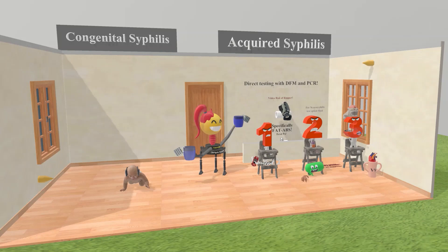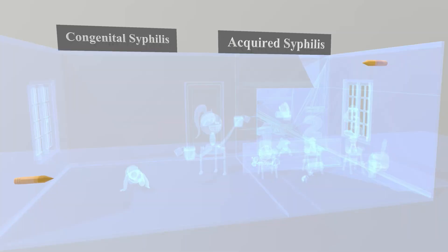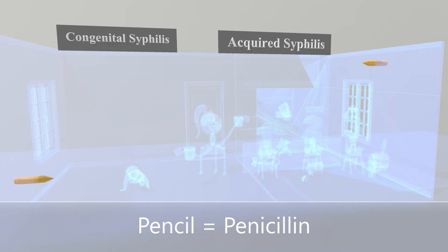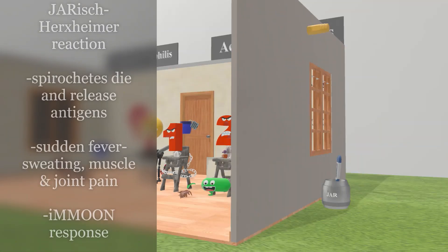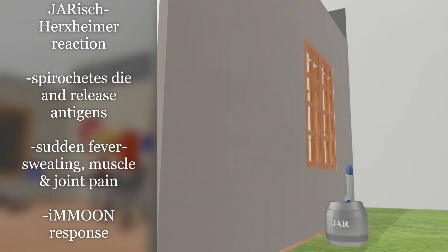For treatment, pencils going through the wall on both sides remind us of penicillin — treatment for syphilis is penicillin. In acquired syphilis we give penicillin; in congenital syphilis, if concerned about the baby, we give the mother penicillin. Under the pencil is a jar, reminding us of the Jarisch-Herxheimer reaction: when spirochetes die and break open, they release lots of antigens at once, making the immune system go haywire. The thermometer inside the jar reminds us of the sudden fever, and sweating as well as muscle and joint pain may also be seen.